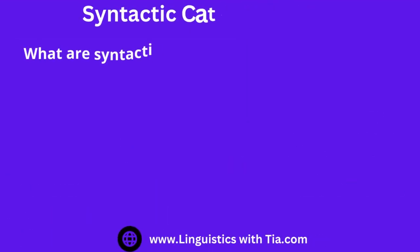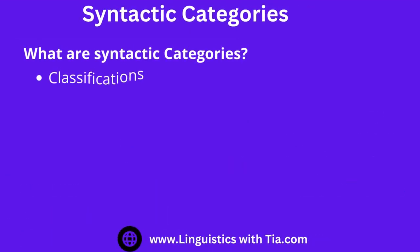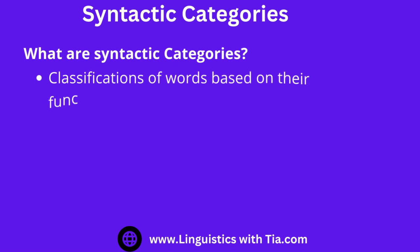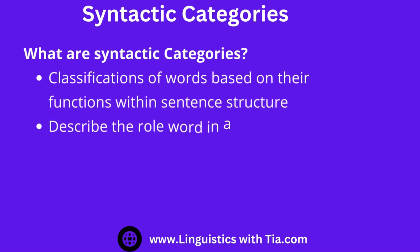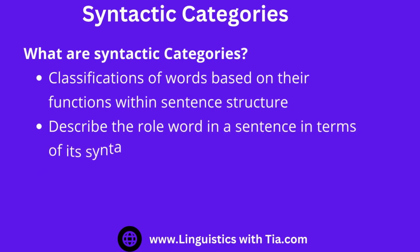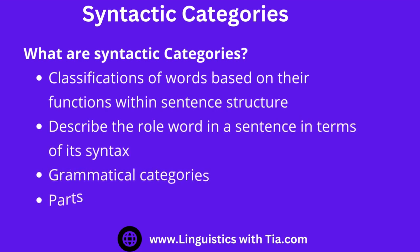Syntactic categories, also known as grammatical categories, refer to the different levels of linguistic analysis used to describe the structure of a sentence. They are parts of speech, or linguistic categories, that define the role of words in a sentence — such as noun, verb, adjective, adverb, pronoun, preposition, and conjunction. These categories have similar grammatical properties and functions in a sentence.